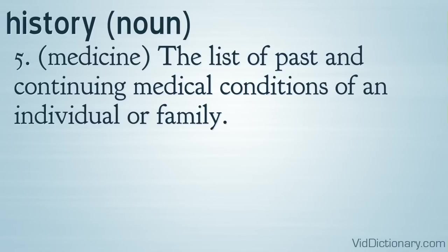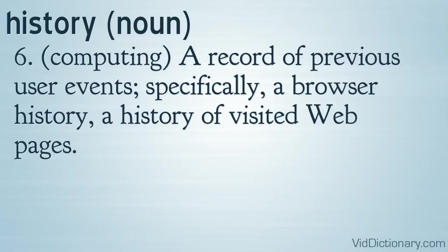Definition 5: Medicine — the list of past and continuing medical conditions of an individual or family. Definition 6: Computing — a record of previous user events, specifically a browser history, a history of visited web pages.